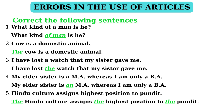In statement 2: 'Cow is a domestic animal.' In this statement, we have to add the article 'the' because we speak of a particular person or thing. The correct statement is: 'The cow is a domestic animal.'